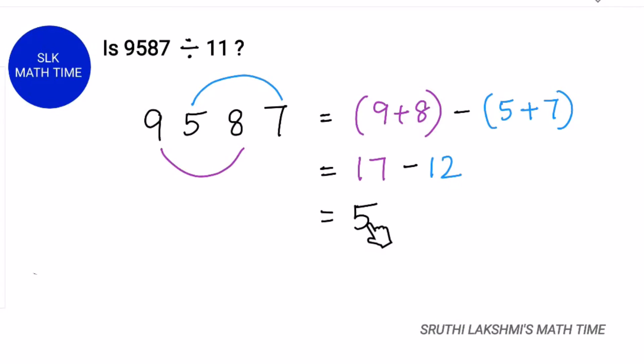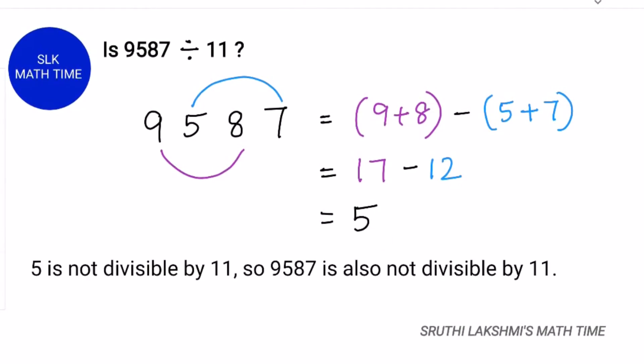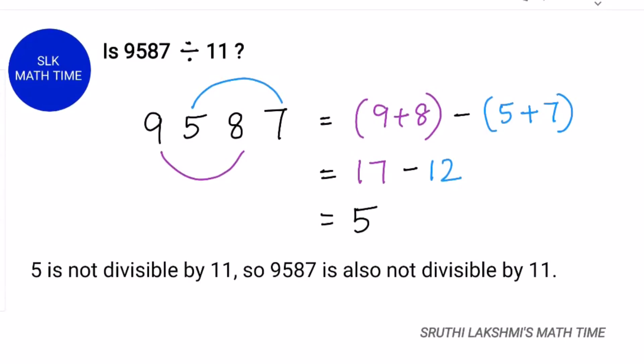Since 5 is not divisible by 11, 9587 is also not divisible by 11.